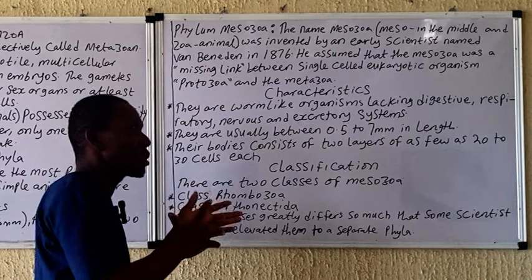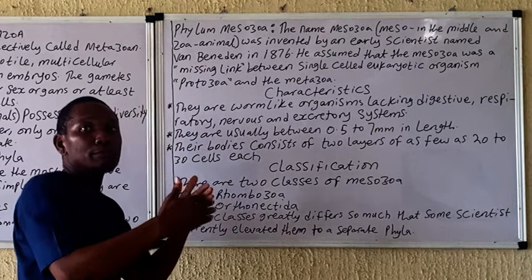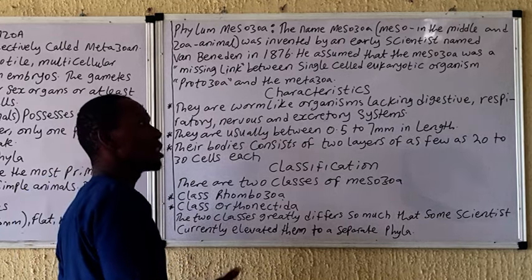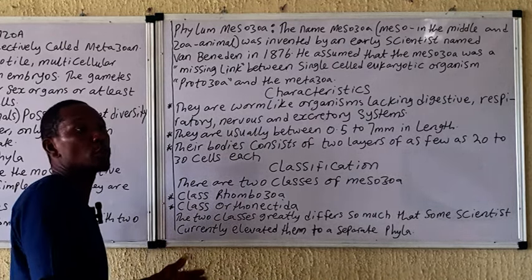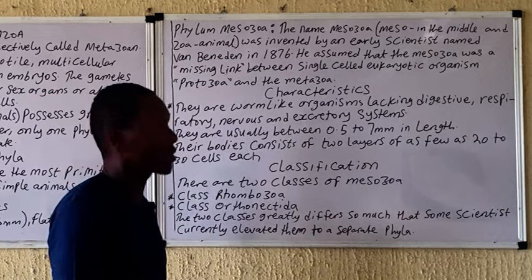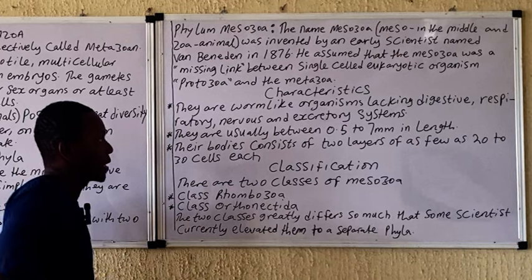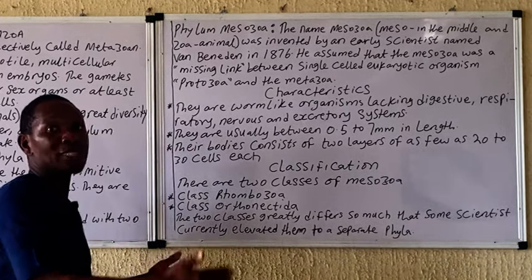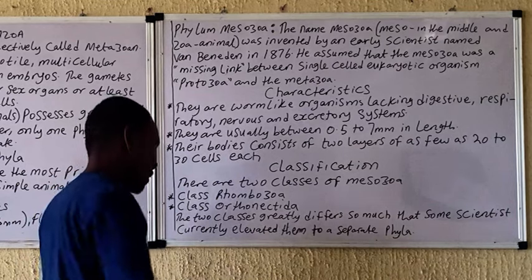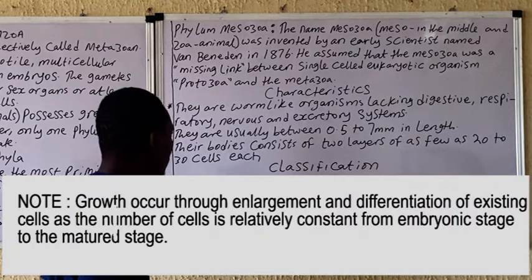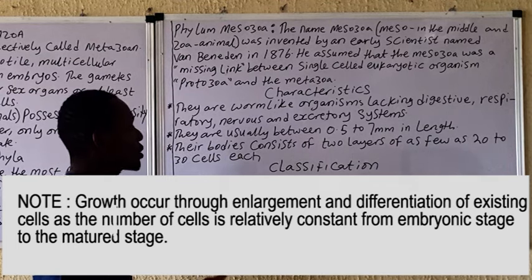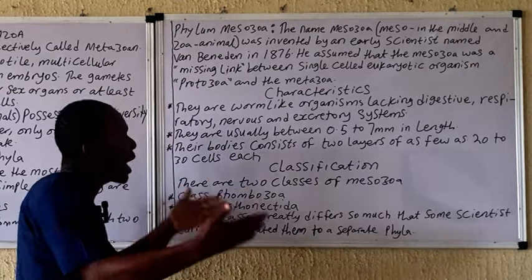This phylum is unique in the sense that its origin is actually being contested. Some scientists suggest that it originates from the Protozoa, while others suggest it originates from flatworms with several body structures being degenerated over time. They are worm-like organisms lacking a digestive system and various other systems. They also lack organized tissue, organized organs, and organized systems. They are usually between 0.5 to 7 millimeters in length, and their body consists of two layers.